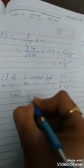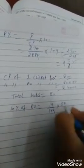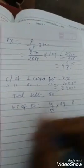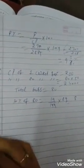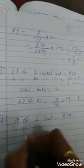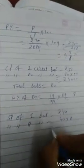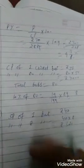Total bats = 80. In the first condition, 10% of total = 10/100 × 80 = 8 bats. 8 bats sold at Rs.40 each. SP of one bat = Rs.40. Then SP of 8 bats = 40 × 8 = Rs.320.